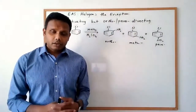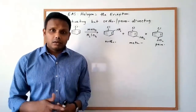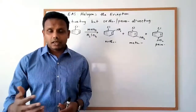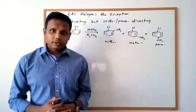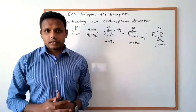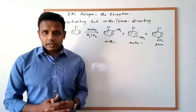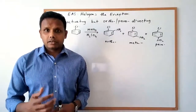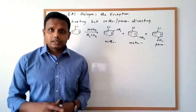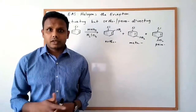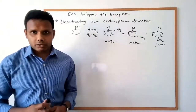What we've seen previously is that activating groups on a benzene direct the incoming electrophile to the ortho and the para positions. Deactivating groups, on the other hand, direct electrophilic aromatic substitution to the meta position. Halo benzenes or halo aromatics are unique in that they are deactivating groups, but the halogen directs the incoming electrophile to the ortho and the para positions. So they are sort of exceptional in this regard.